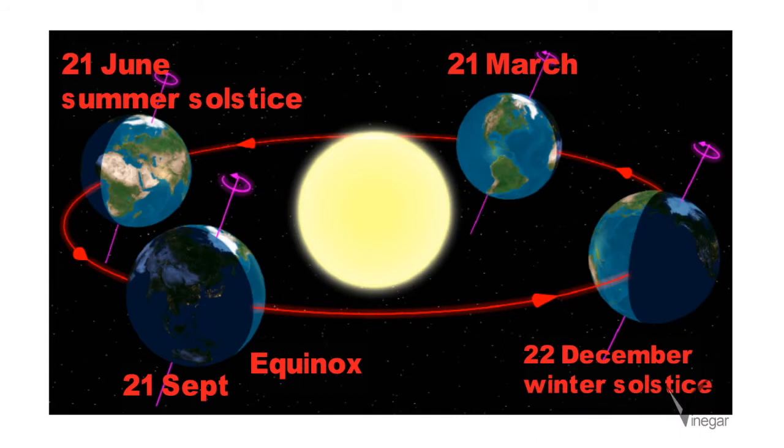During a solstice the duration of a day is maximum. These dates can also vary by a day or two.